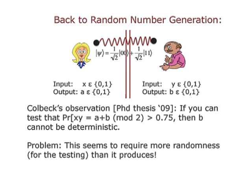That might suggest you could generate random numbers and certify them: you run this game over and over, test if the outputs violate the 0.75 Bell inequality, and if they do, the output must be random. If there's randomness in there, you can always use an extractor and get that randomness out in a nice form. However, there's only one problem: doing all the tests seems to require much more randomness than the whole procedure produces in the first place.